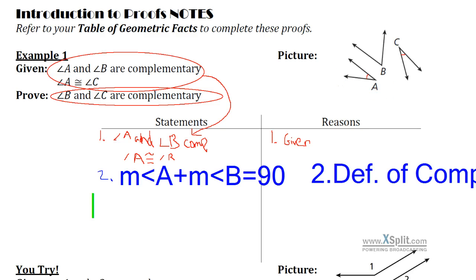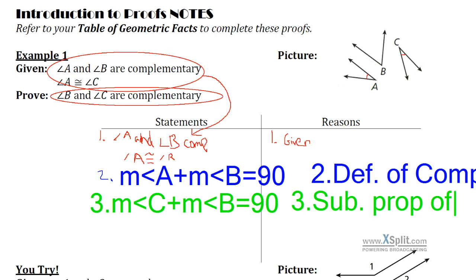Well, as a step three, I'll go ahead and put step three in green. Step three, measure of angle C plus the measure of angle B is equal to 90. Now, how do I know that? I know that because angle A and angle C are congruent. So I'm going to replace A with C. I'm essentially just going to do substitution. It's called the substitution property of equality or property of congruence.